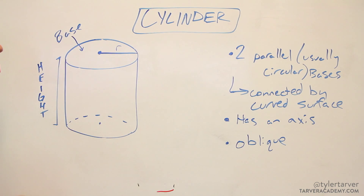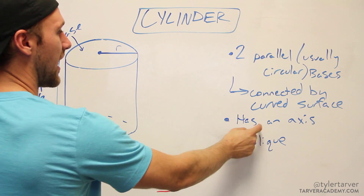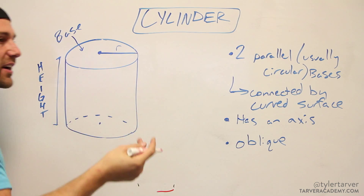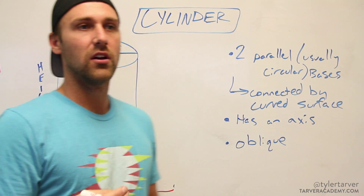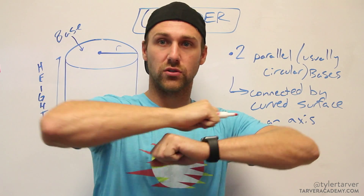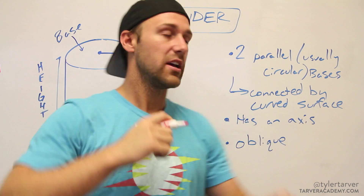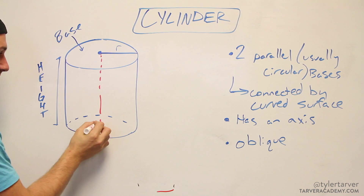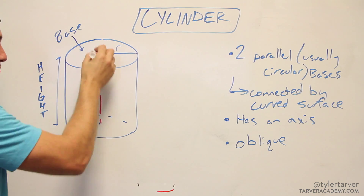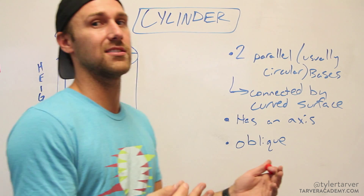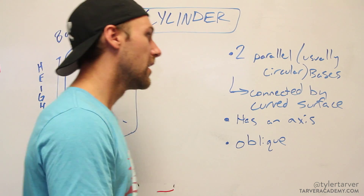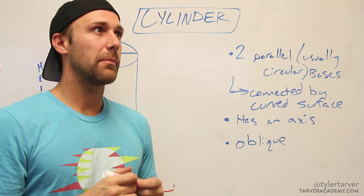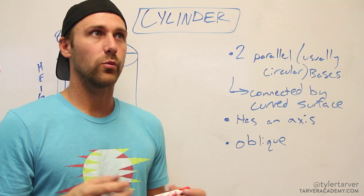The only other term is that a cylinder has an axis. An axis is just like an axle in your car that connects your wheels — it's the line that goes through the center, connecting the two centers of your bases.